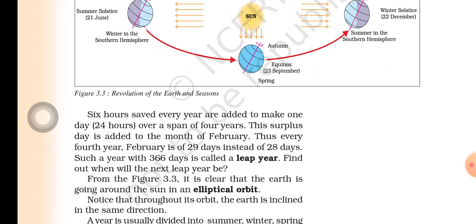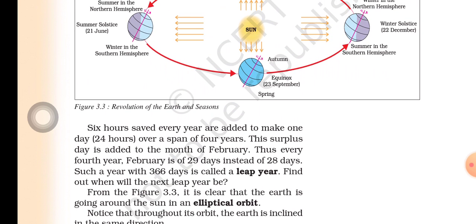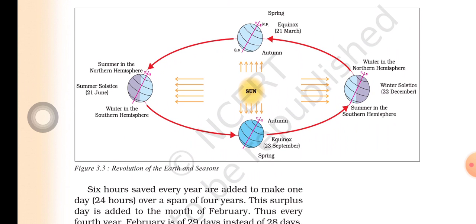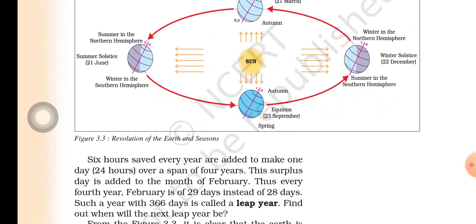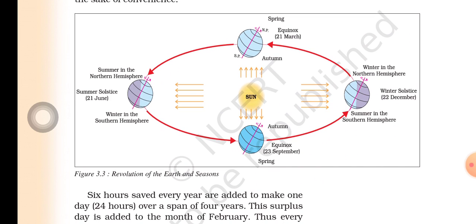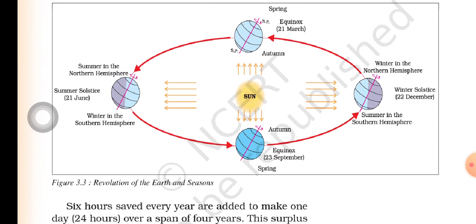Such a year with 366 days is called a leap year. Every year the quarter day — or six hours — is accumulated, and after four years it is added as one extra day: that is the leap year, which gives us February 29th. Now look at figure 3.3: Revolution of the Earth and the Seasons.